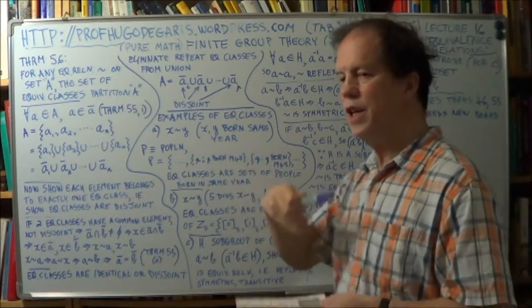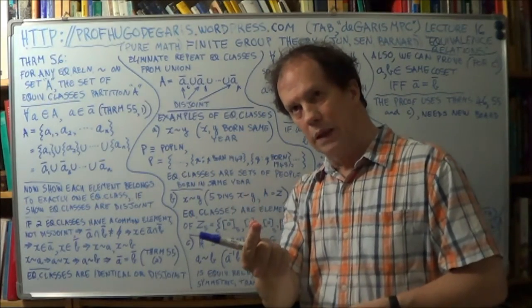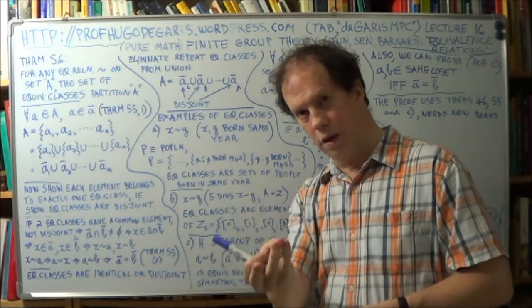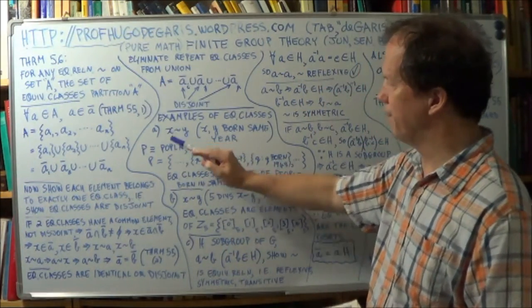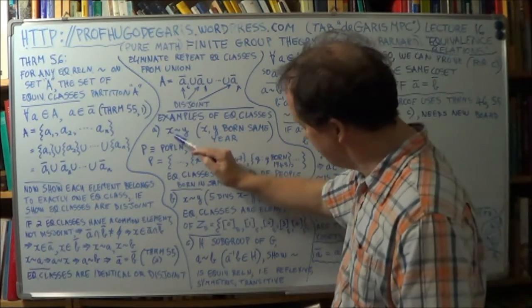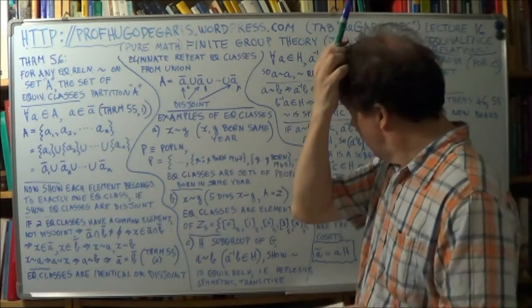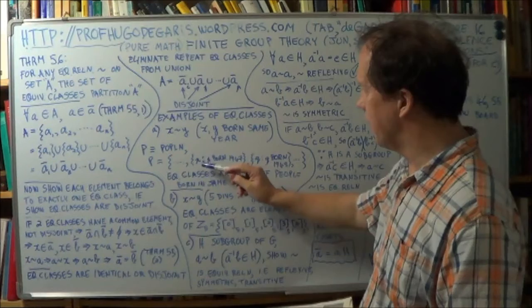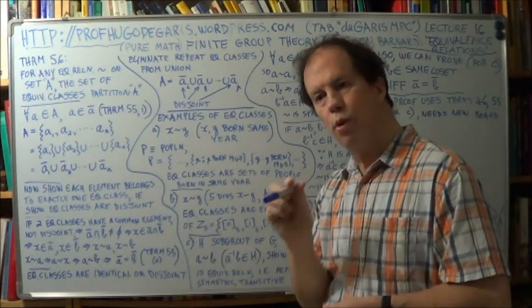Now, it is an equivalence relation. You could prove that fairly readily just by showing the three properties. Reflexive, symmetric, and transitive holds. Yeah, it's not too difficult. Okay? So, for this residual equivalence relation, tilde, what are the equivalence classes? Well,